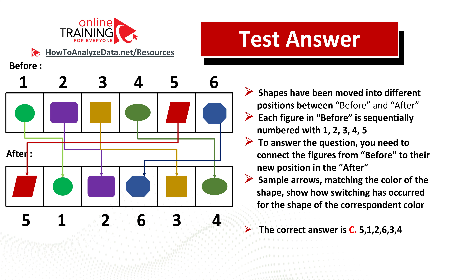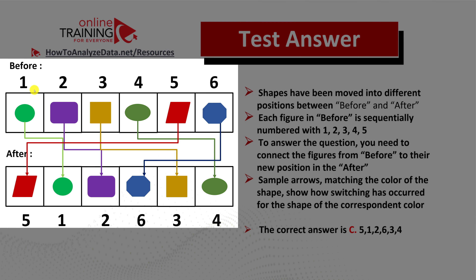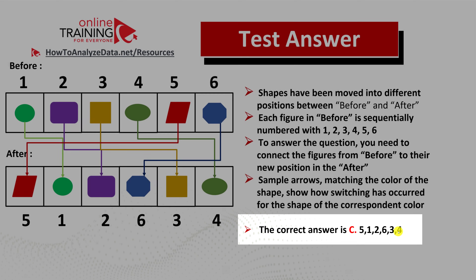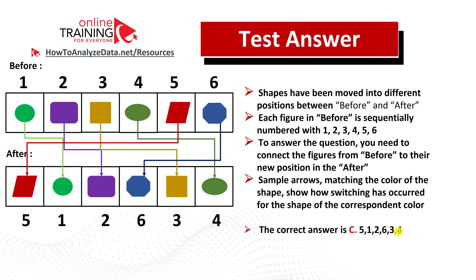The best way to solve this challenge is to trace each object from its old position to the new position. For example, the green oval was in position one before and is now in position two. If you trace all the objects, the previous positions were 1 2 3 4 5 6 and the new positions are 5 1 2 6 3 4. The correct answer is choice C: 5 1 2 6 3 4. You need to do all of this mentally in about 30 seconds, so practice is key.